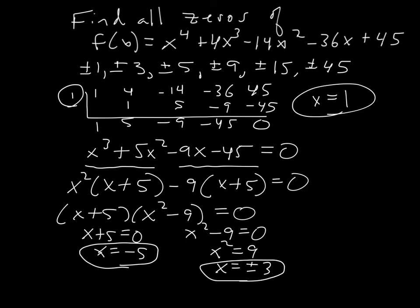We have four answers — x=1, x=−5, x=3, x=−3 — for a fourth-power polynomial. Not anything really too new; the key is you have to finish the problem and find ALL the answers, not just list the rational zeros. The homework is only 10 problems, though they're a little longer than normal. Good luck, hope this helps, work hard, be nice — see you soon!